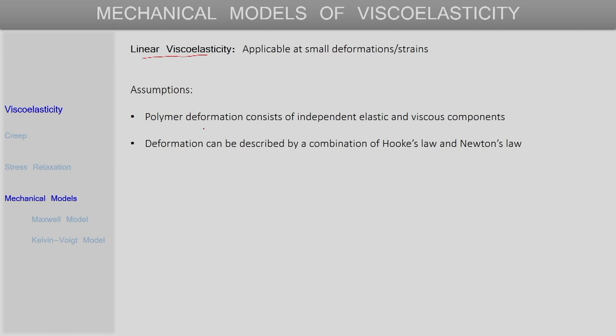The assumptions in these linear viscoelasticity models are that the deformation of the polymer consists of independent contributions from an elastic kind of response and a viscous kind of response. Another simplification is that all the deformation of this viscoelastic material will be described by a combination of Hooke's law, which is valid for linear elastic materials, and Newton's law, which is valid for linear viscous materials.